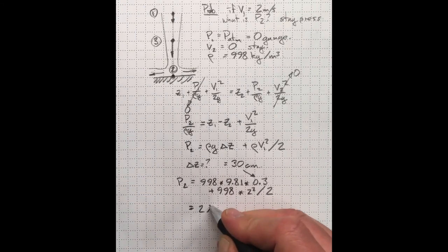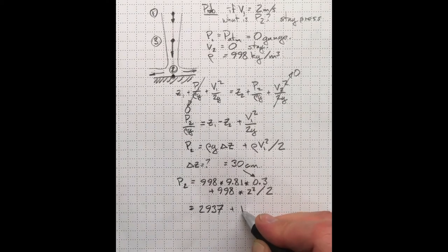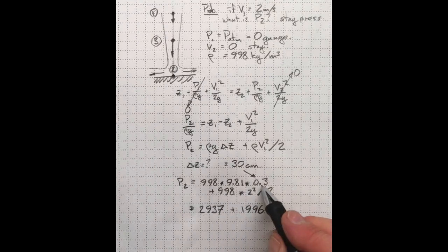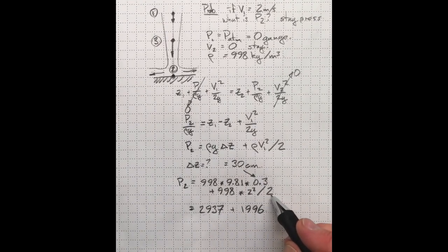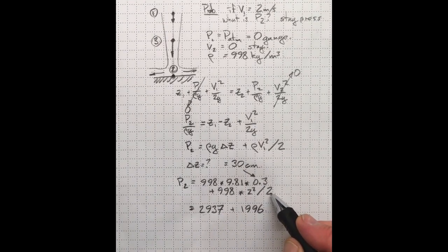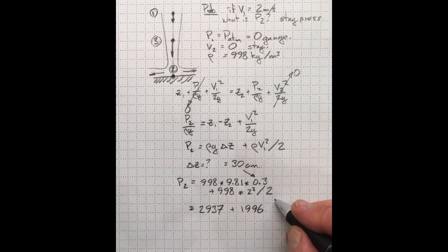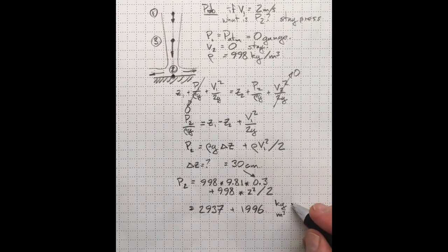The two values, 2937 from this term associated with the elevation, and 1996 from this term associated with the kinetic energy at location one. So those are the units, kilograms per cubic meter for density, meter per second squared for acceleration due to gravity, and meters for the elevation difference.